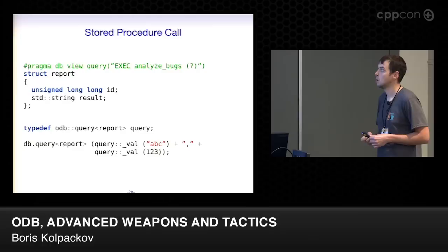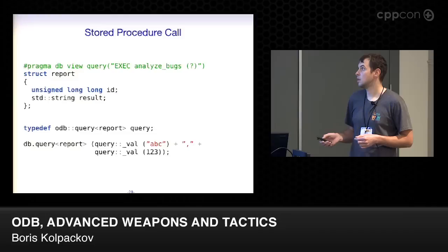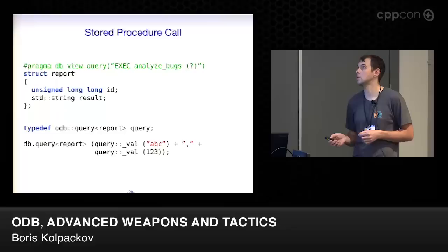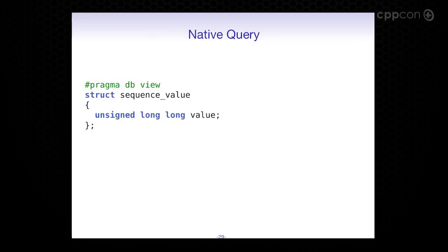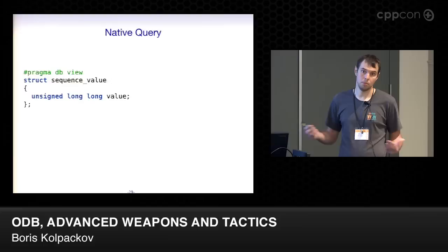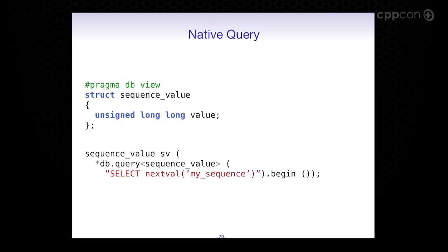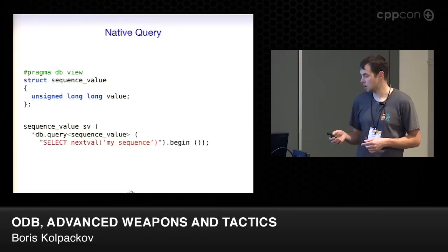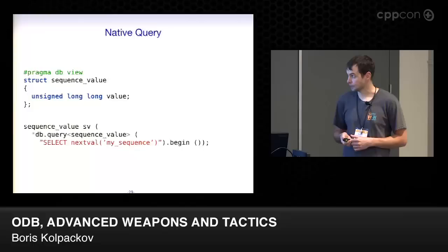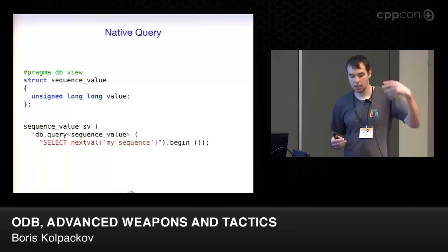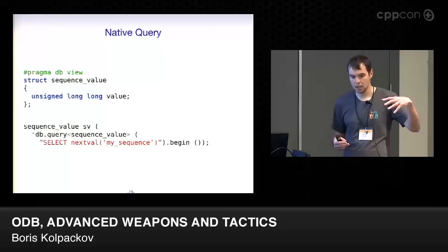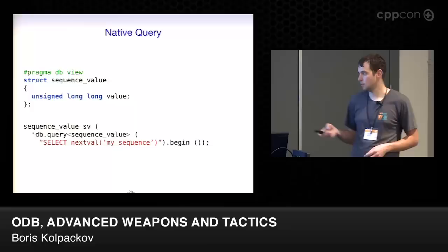You can also use views to call stored procedures — there's an example for SQL Server. At the lowest level, you can use a native view where you declare it as a view and provide the actual query at runtime. This is an example of a completely custom select statement — for instance, returning the next value of a sequence in Postgres. The idea of views, summarized: at the highest level you work in terms of objects, and you can go all the way down to a native select statement or procedure call.